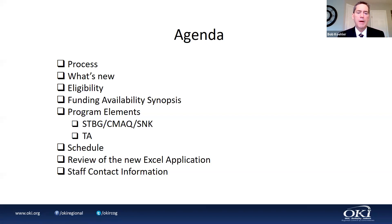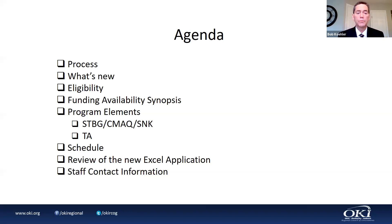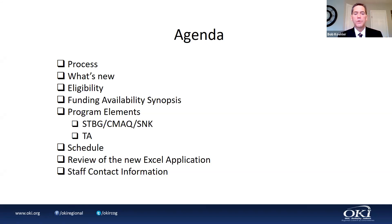There are two basic applications: the STBG, which also includes the CMAC and SNK. As most of you know, SNK is precisely STBG, but our friends in Frankfurt call it SNK — so it's the same as STBG in Ohio. The transportation alternatives is a separate application, and Summer will cover that later. We'll also bring up the new Excel application for a brief highlight and provide you with staff contact information.